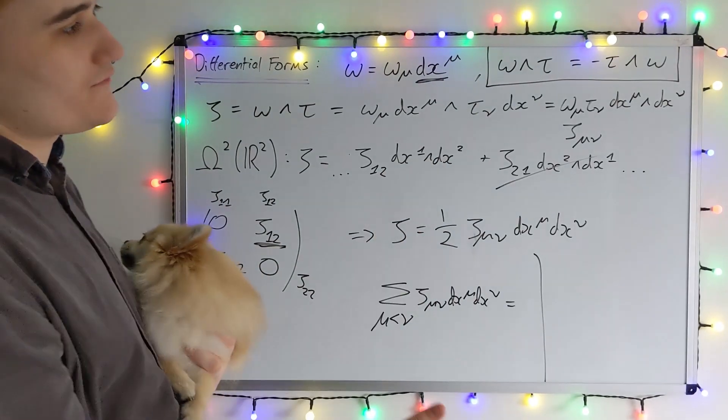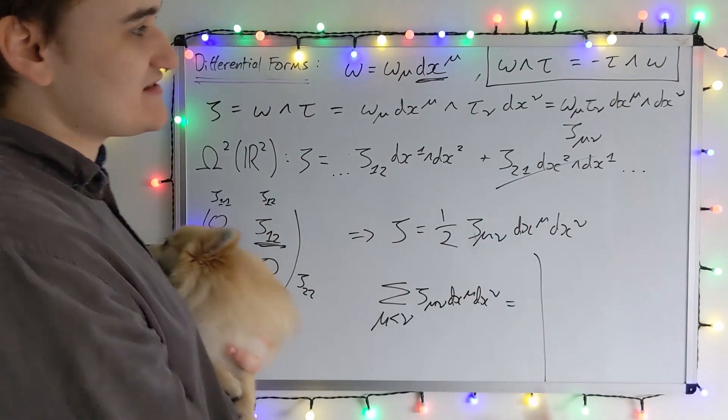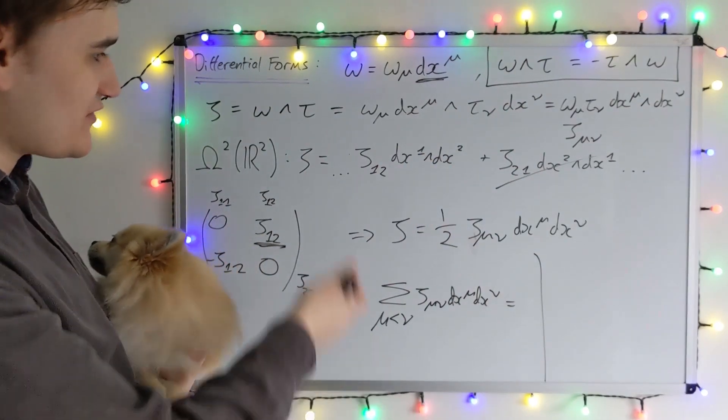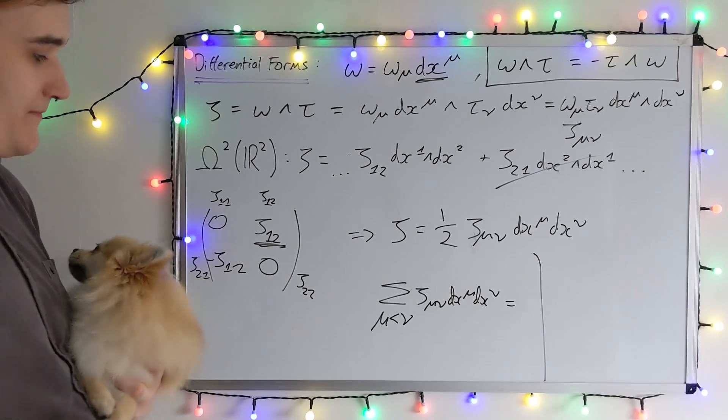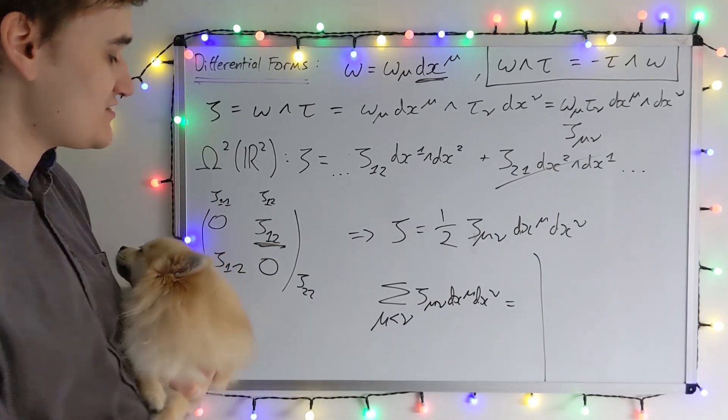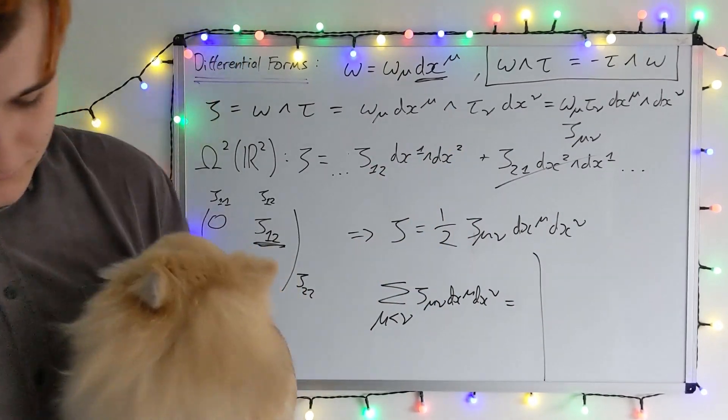And then from one forms and using the new wedge product, being really careful about the anti-symmetry property of the wedge product, I showed you how we can get an expression for the components of a two form in two dimensions. And we saw how a lot of the components become redundant or vanish due to this anti-symmetry.